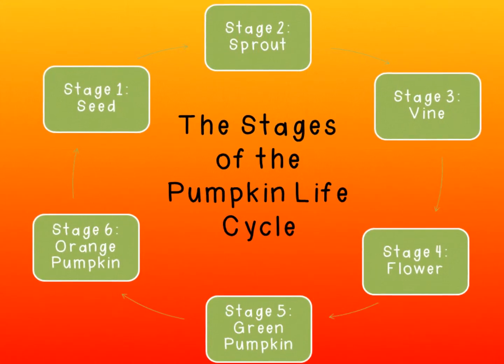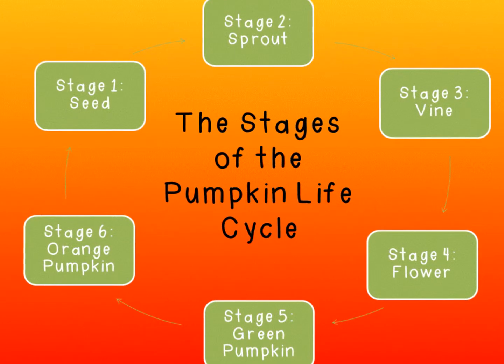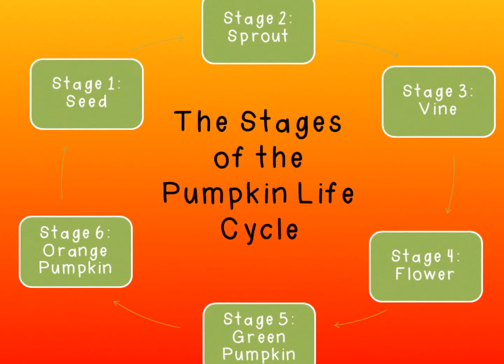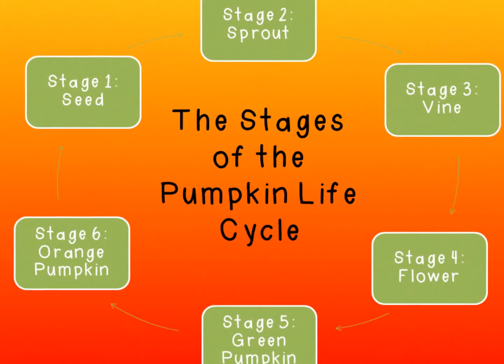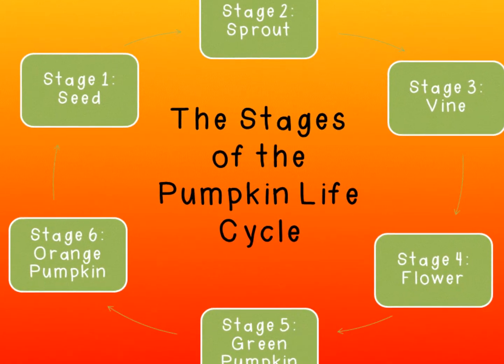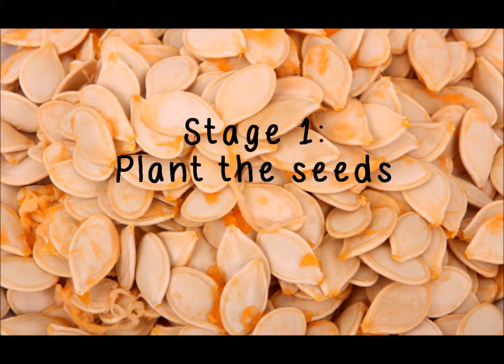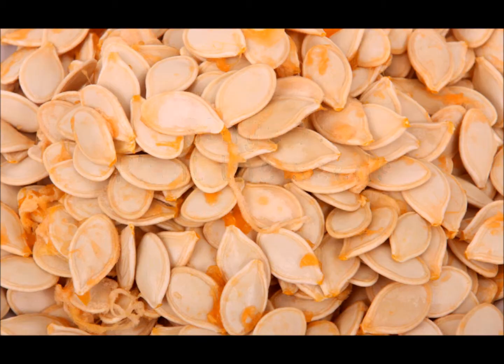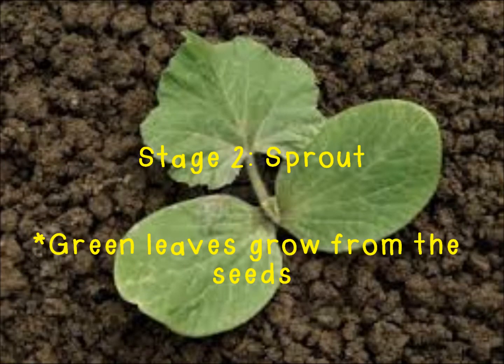There are six stages in the life cycle of a pumpkin. In the first stage, we plant the seeds, which are found inside of the pumpkin. After the seeds are planted, a green leaf begins to grow from the seeds. This is called the sprout.